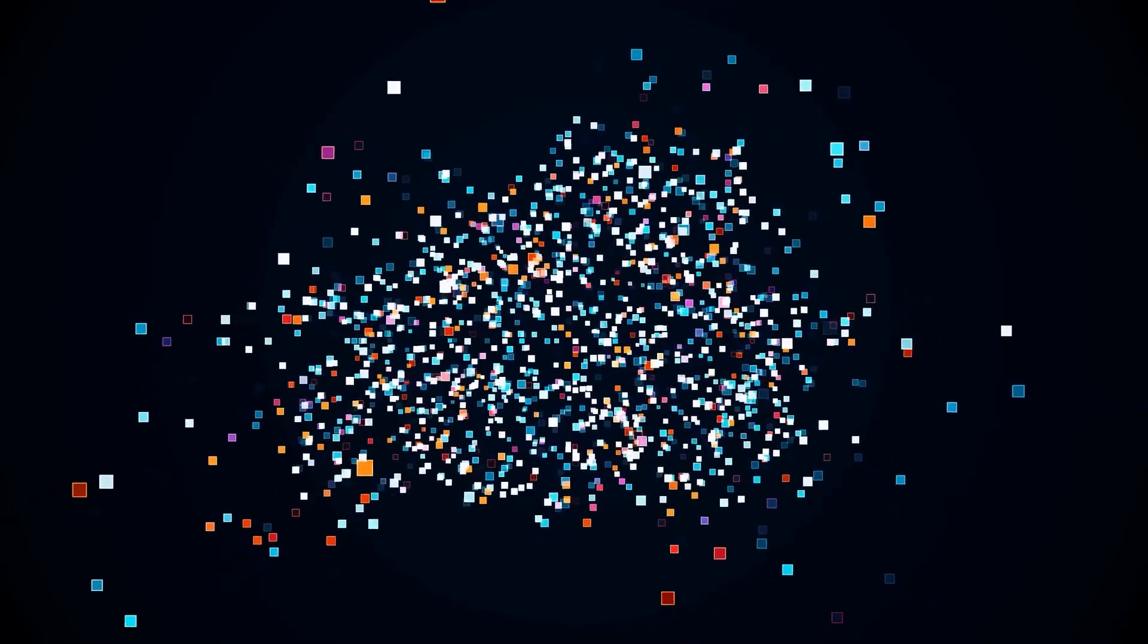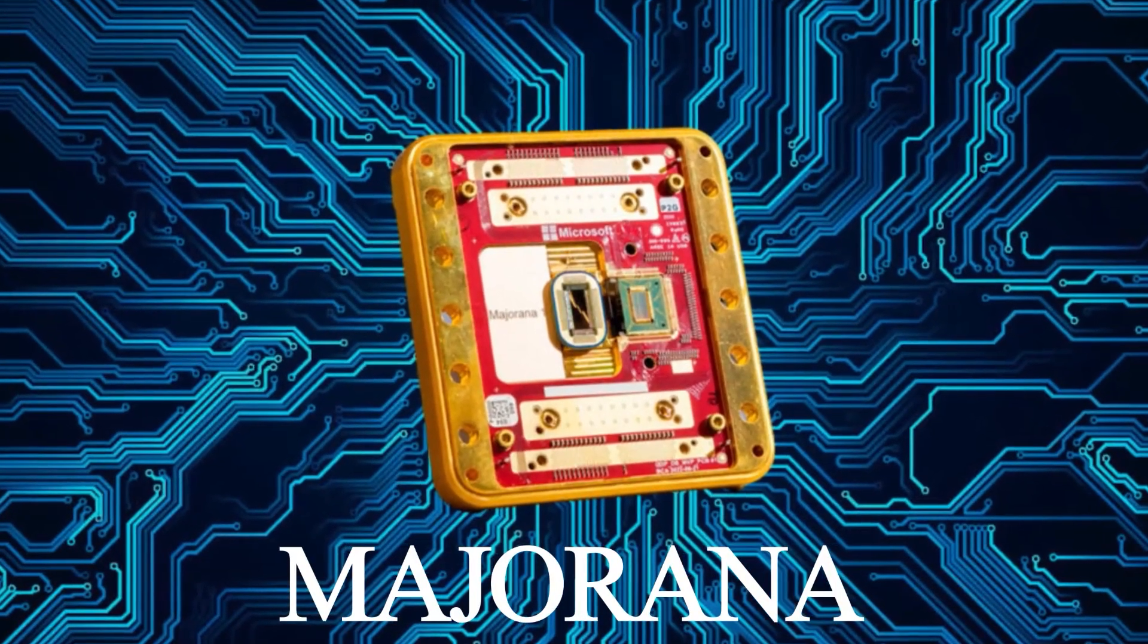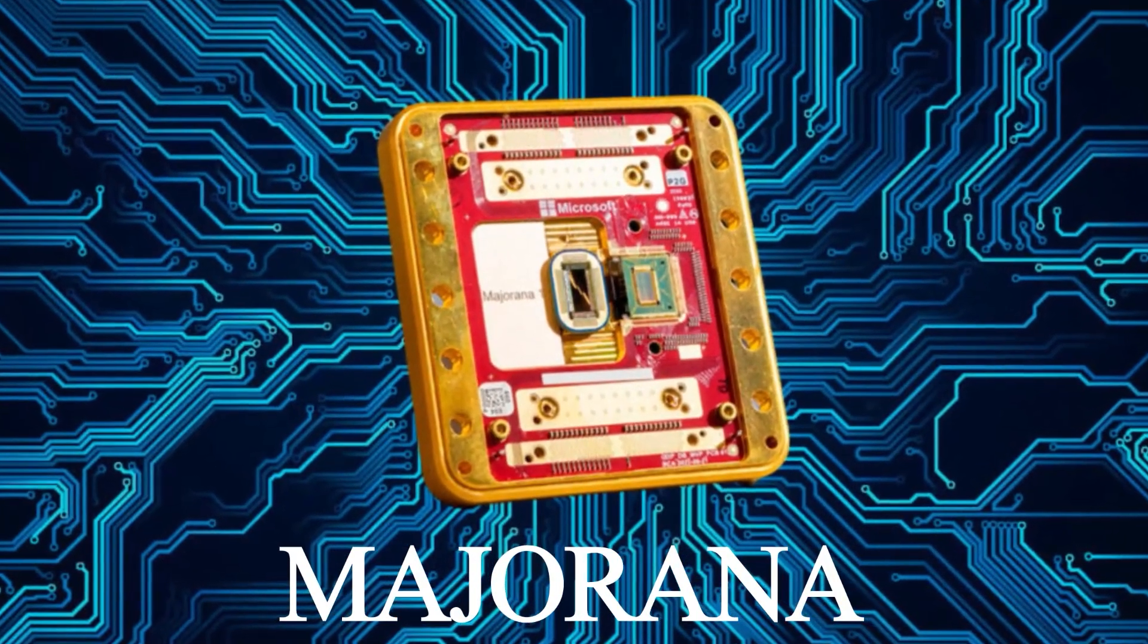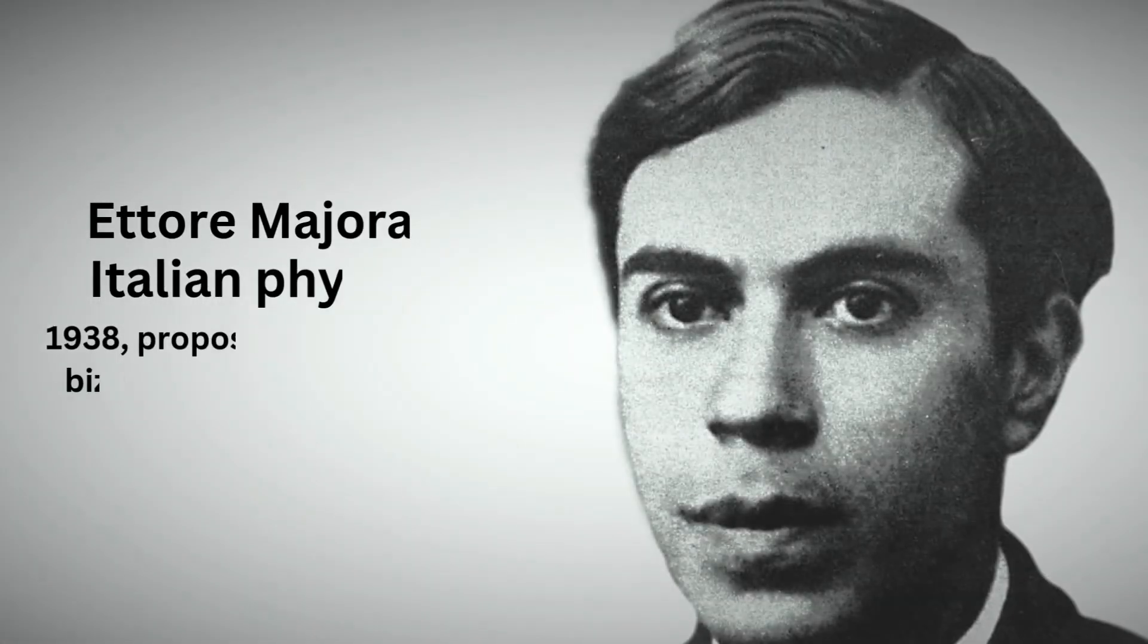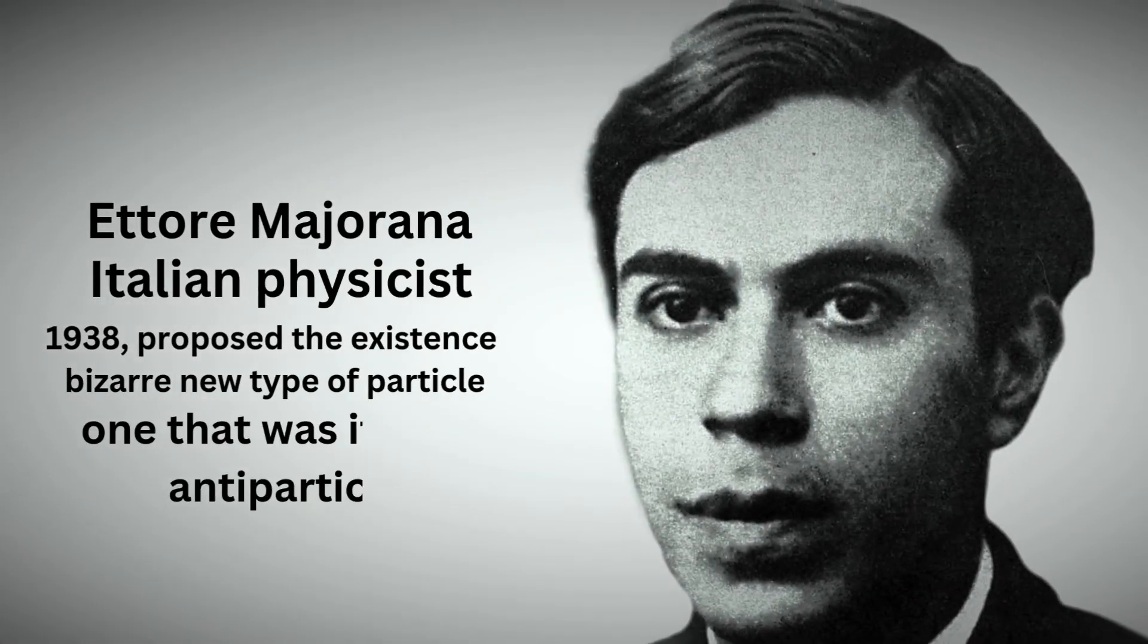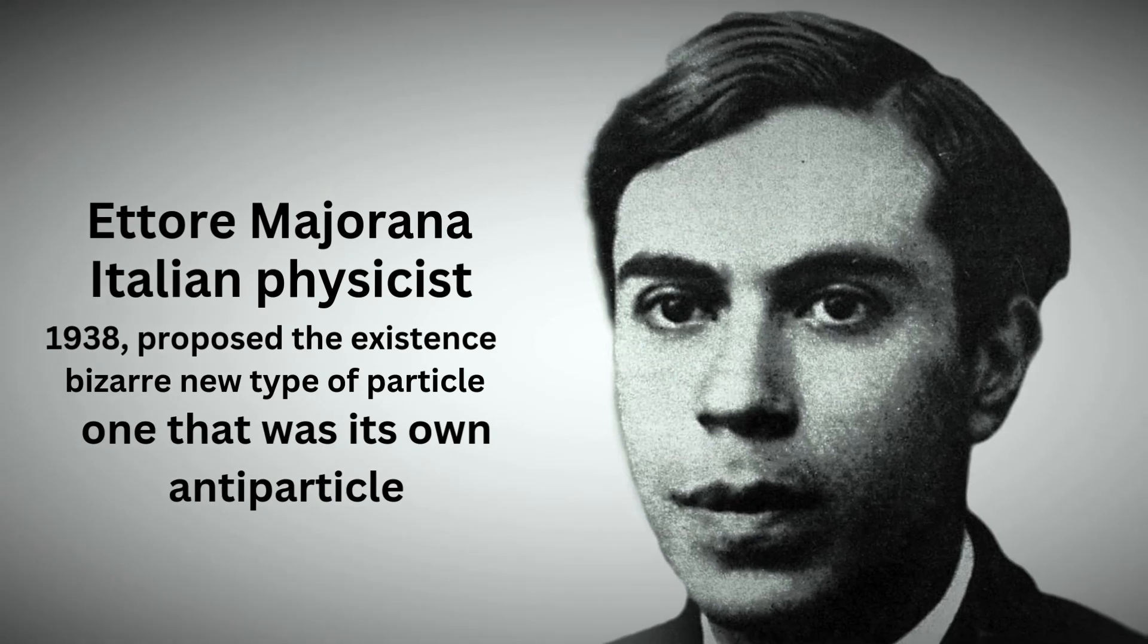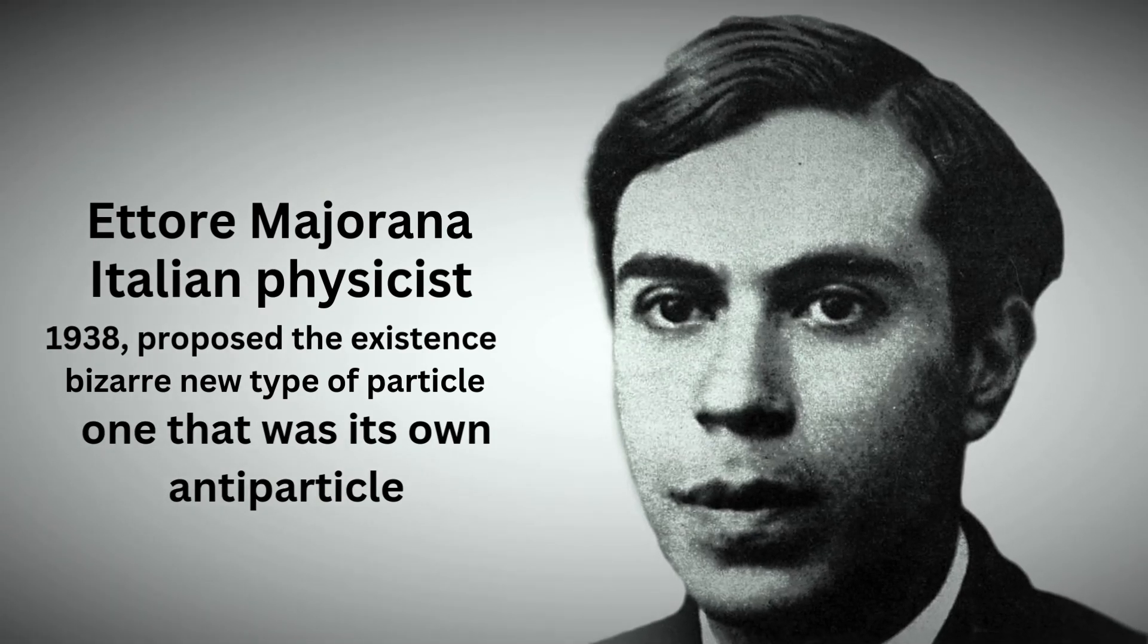The particle that shouldn't exist. If the name Majorana sounds unfamiliar, you're not alone. It's named after Ettore Majorana, an Italian physicist who, in 1938, proposed the existence of a bizarre new type of particle, one that was its own antiparticle.